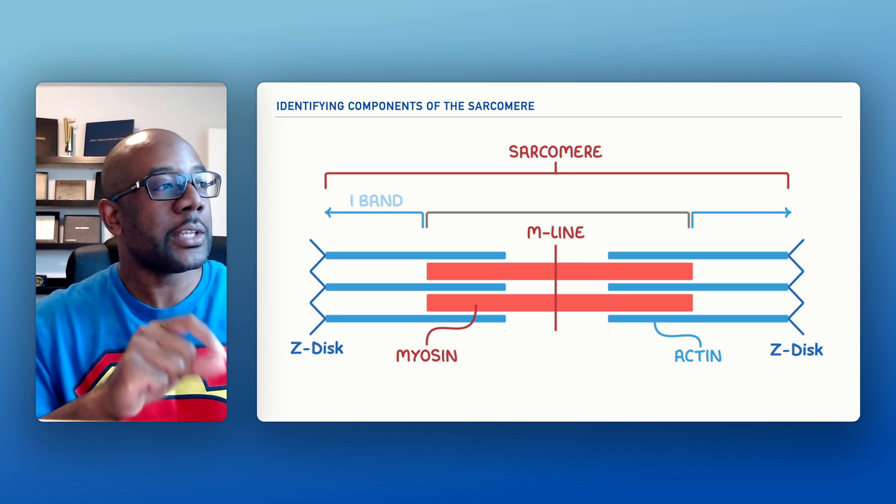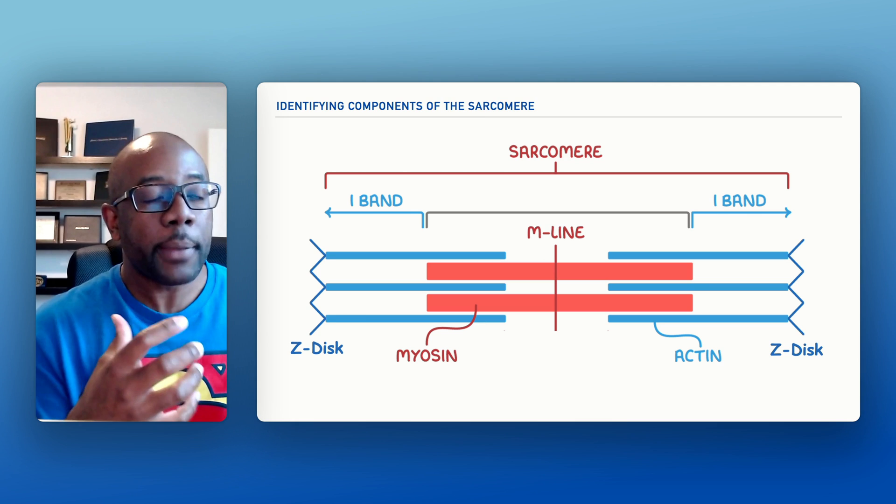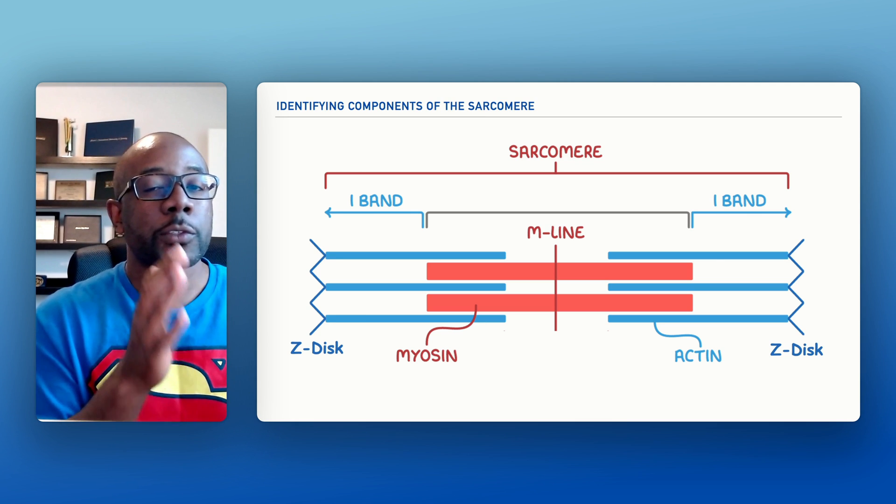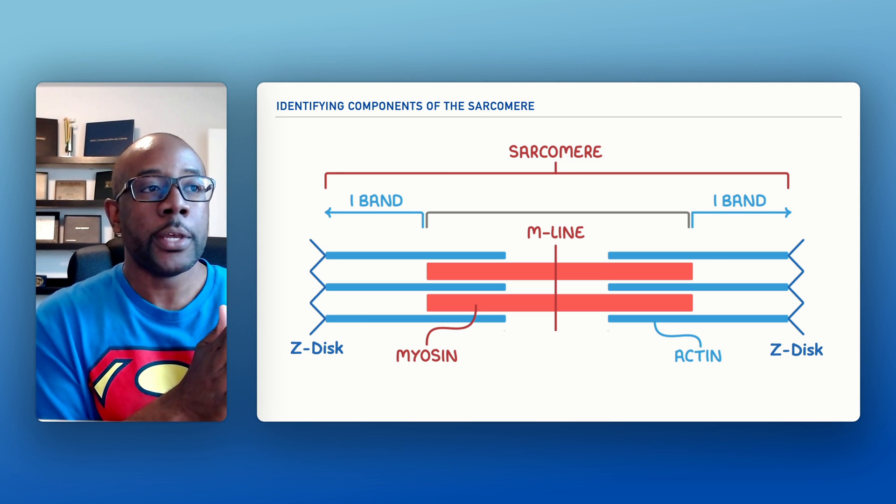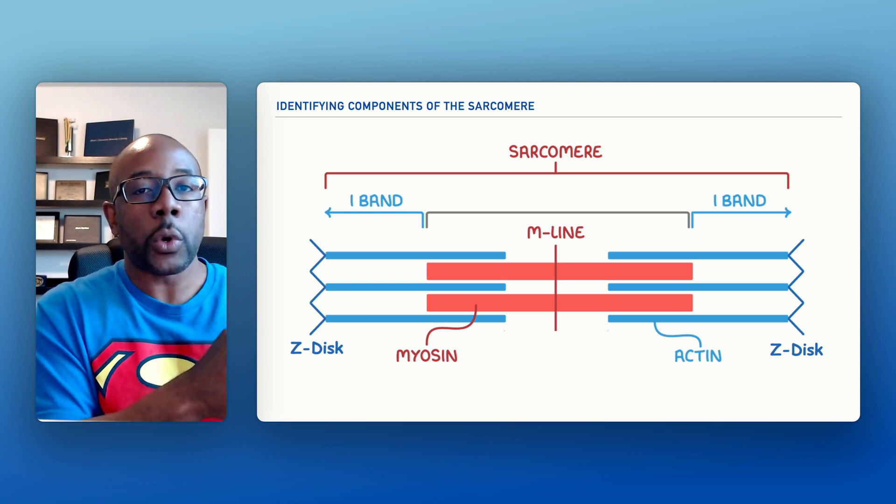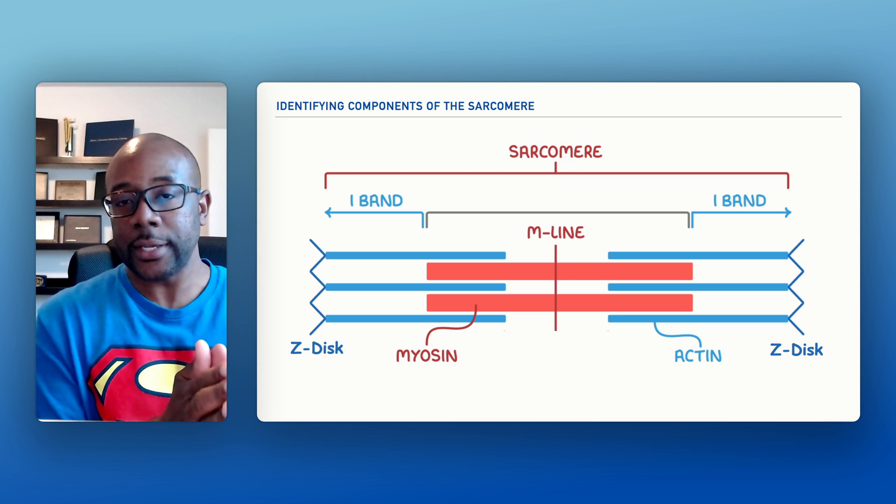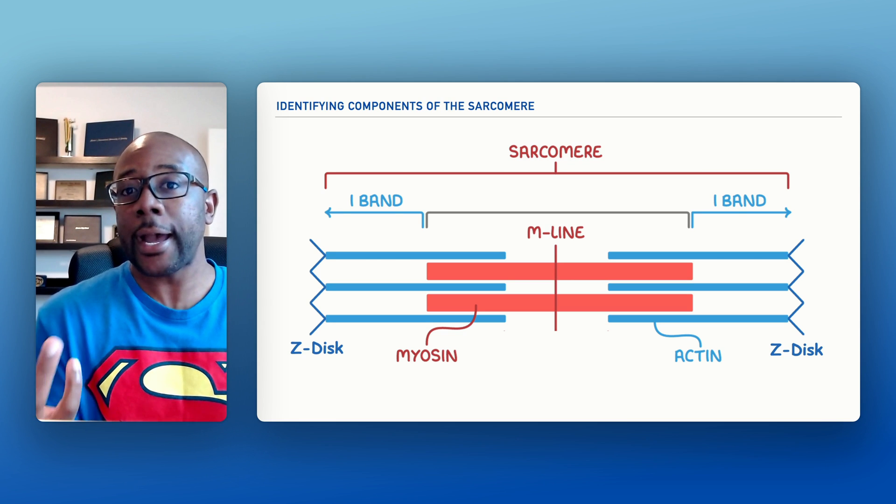So let's take a look at what we refer to as the I-band. Now the I-band represents a small component of the sarcomere, specifically the bracketed sections that we see. It's showing a portion of the actin all the way to the Z-disc. So that's what we call the I-band.